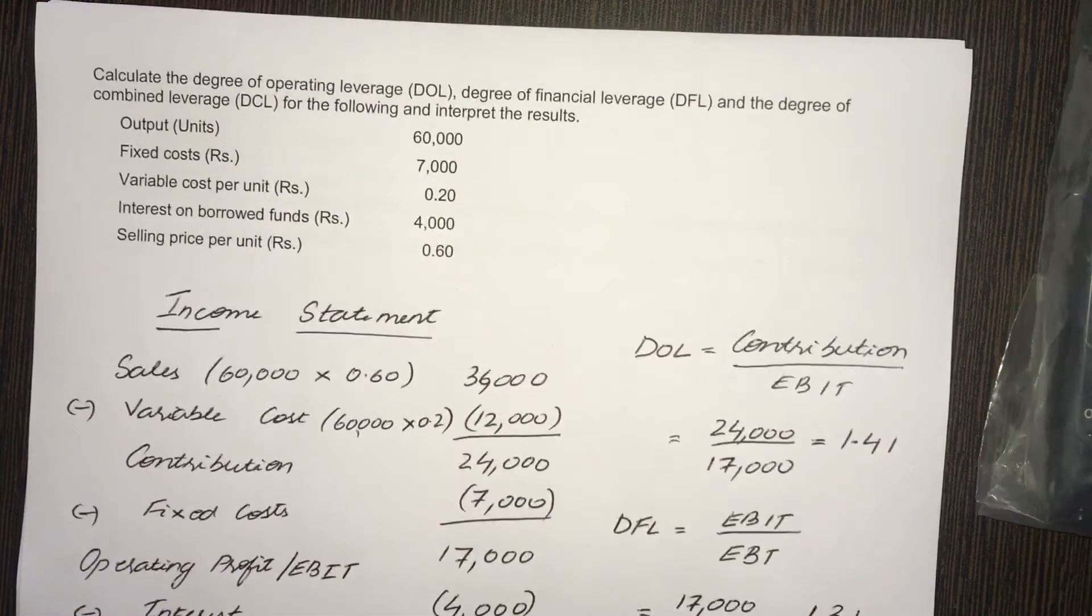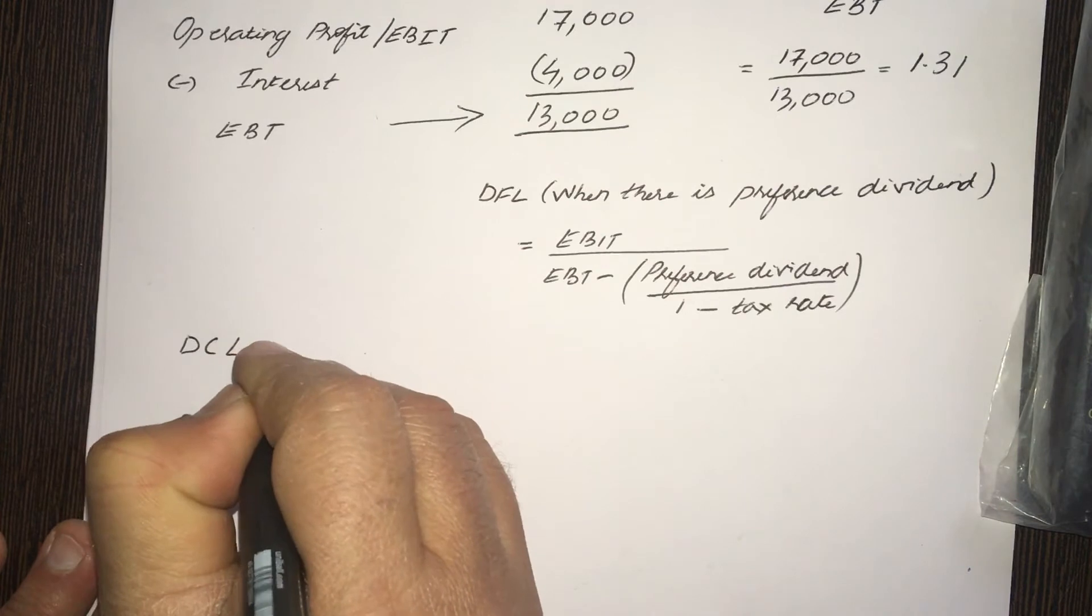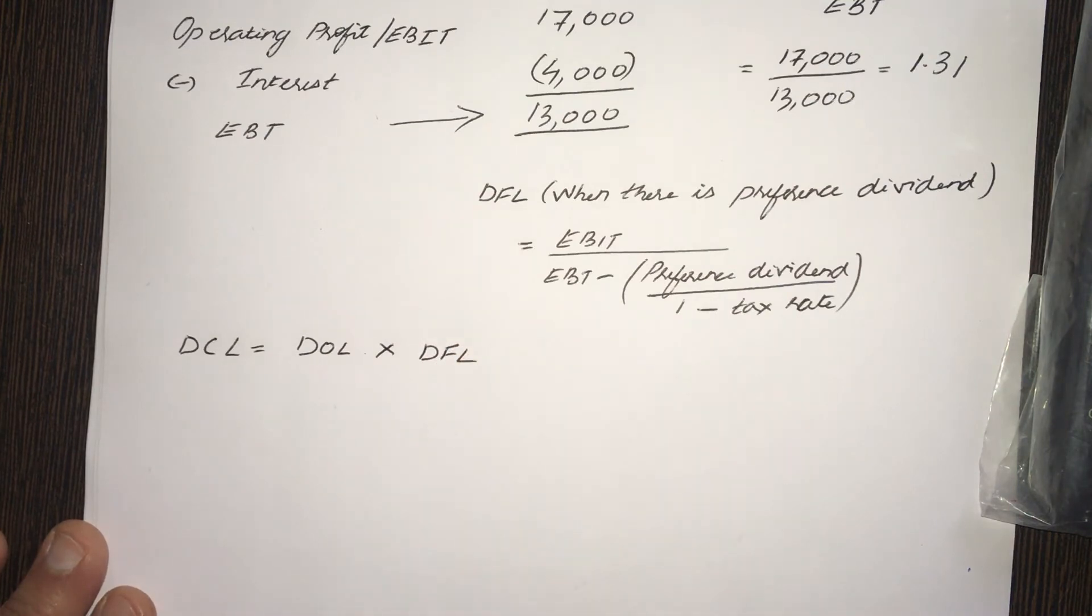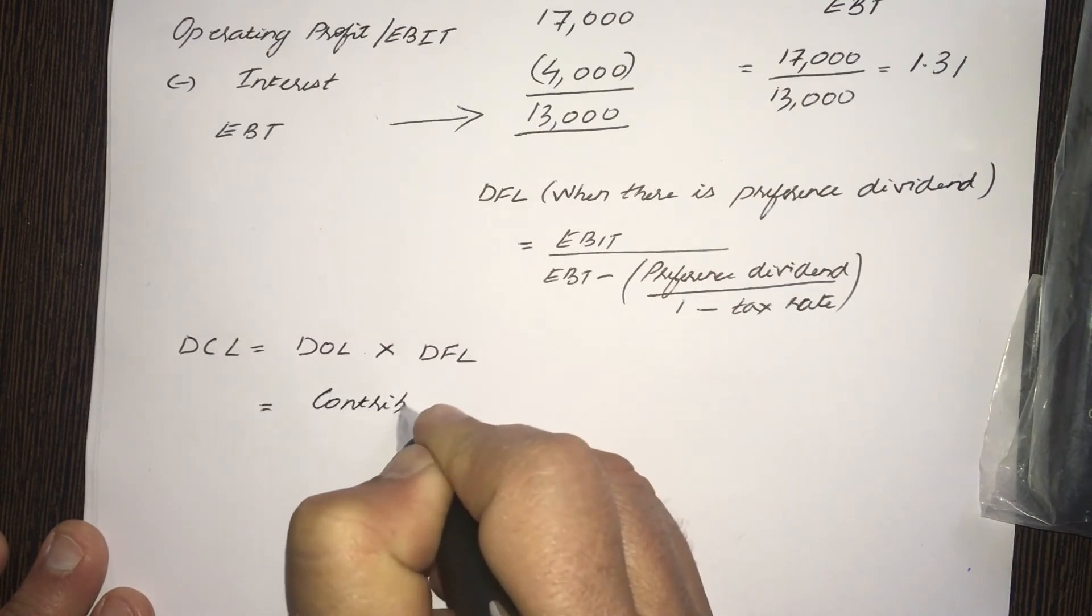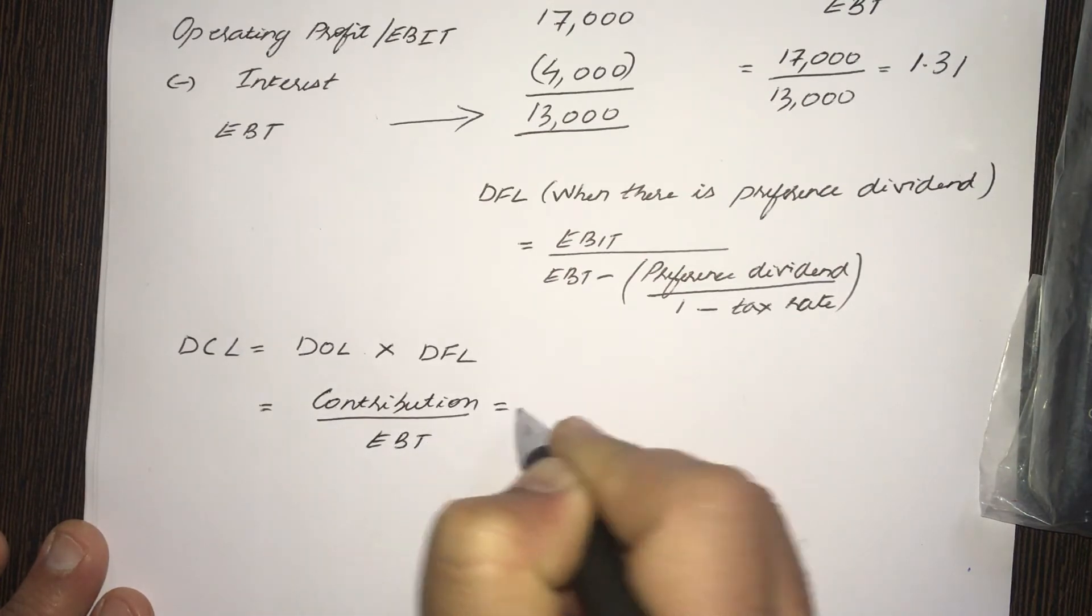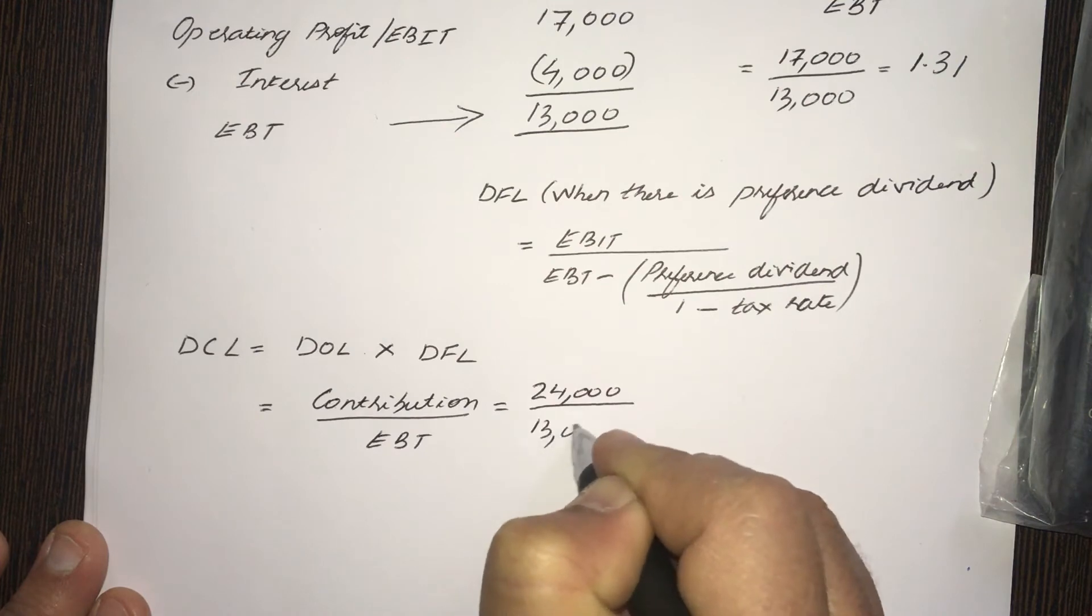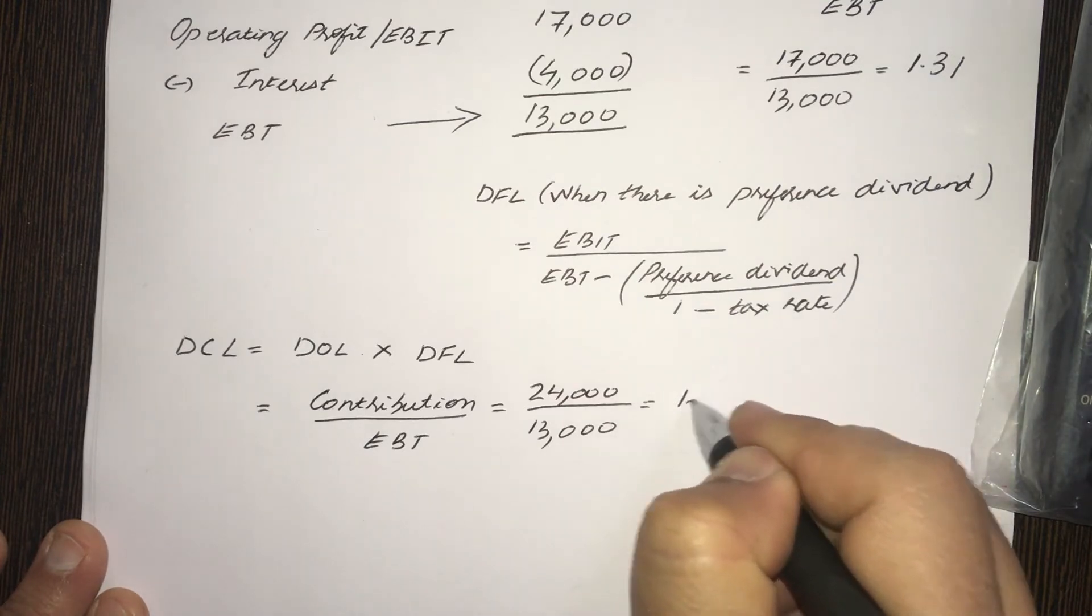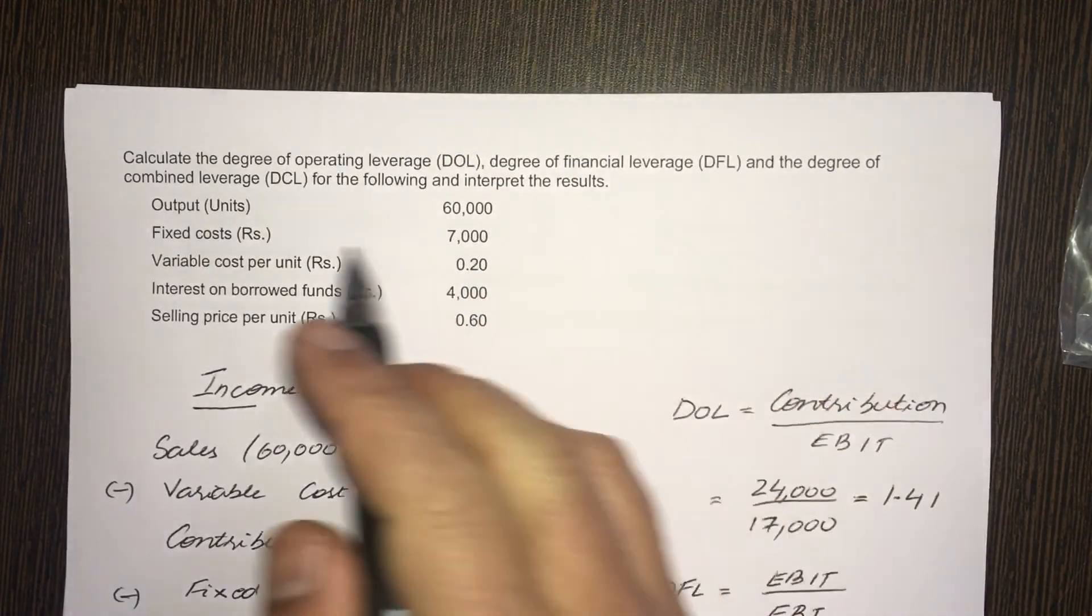Now, let's find out DCL, Degree of Combined Leverage. DCL is very simple. DCL equals DOL times DFL. That is one way of doing it. Or, DCL equals contribution by EBT, which in this case is 24,000 contribution divided by EBT, 13,000. That equals 1.85. So, we are done with the calculation of DOL, DFL, and DCL.